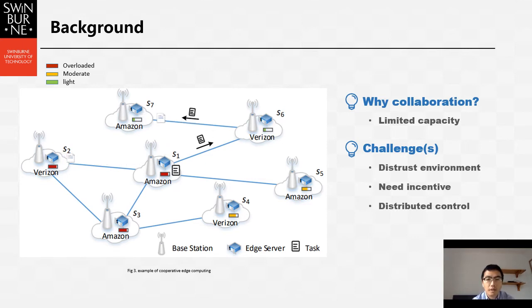By offloading many opportunities, cooperative edge computing also raises many problems. In edge computing environments, edge servers are usually deployed and managed by different edge infrastructure providers, like Amazon and Verizon in the example. They are often self-interested. Therefore, they may not be willing to perform others' tasks.